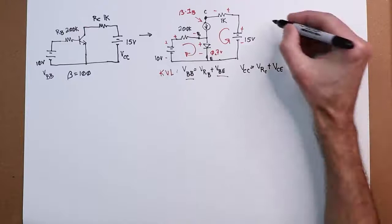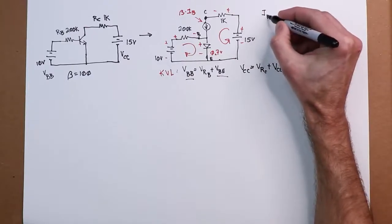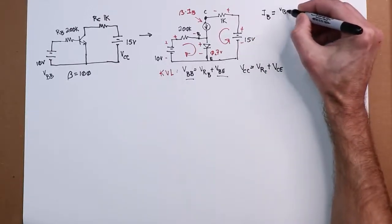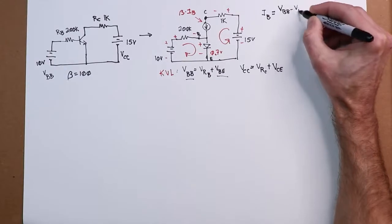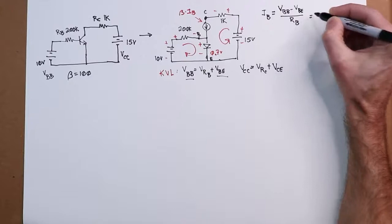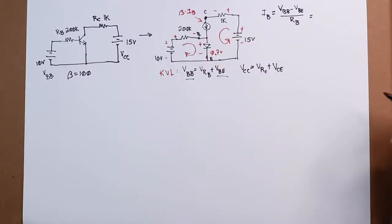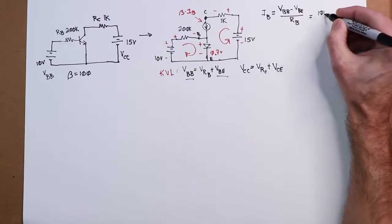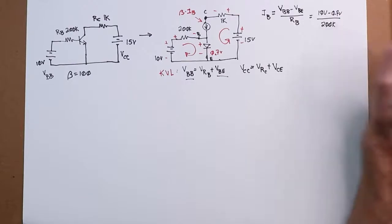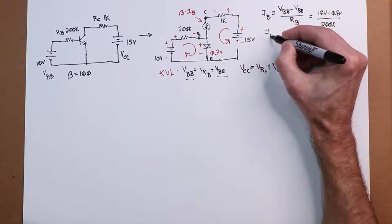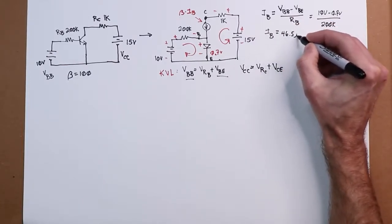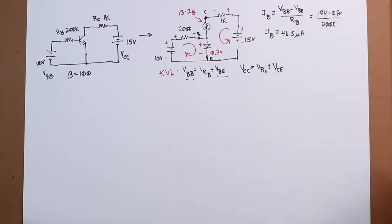That gives us the voltage across this resistor. I can then use Ohm's law to find the current. In other words, IB would have to be the source voltage VBB minus VBE over RB. So I'm not doing anything fancy here, just using basic KVL and Ohm's law. That's 10 volts minus 0.7 divided by 200k, and that is going to give us a base current of 46.5 microamps.